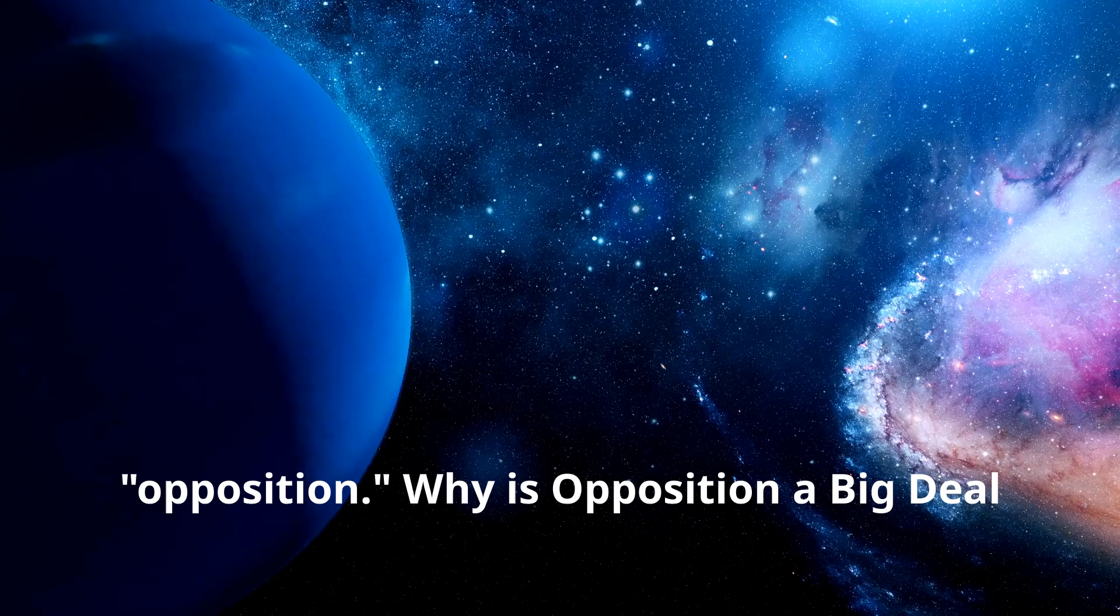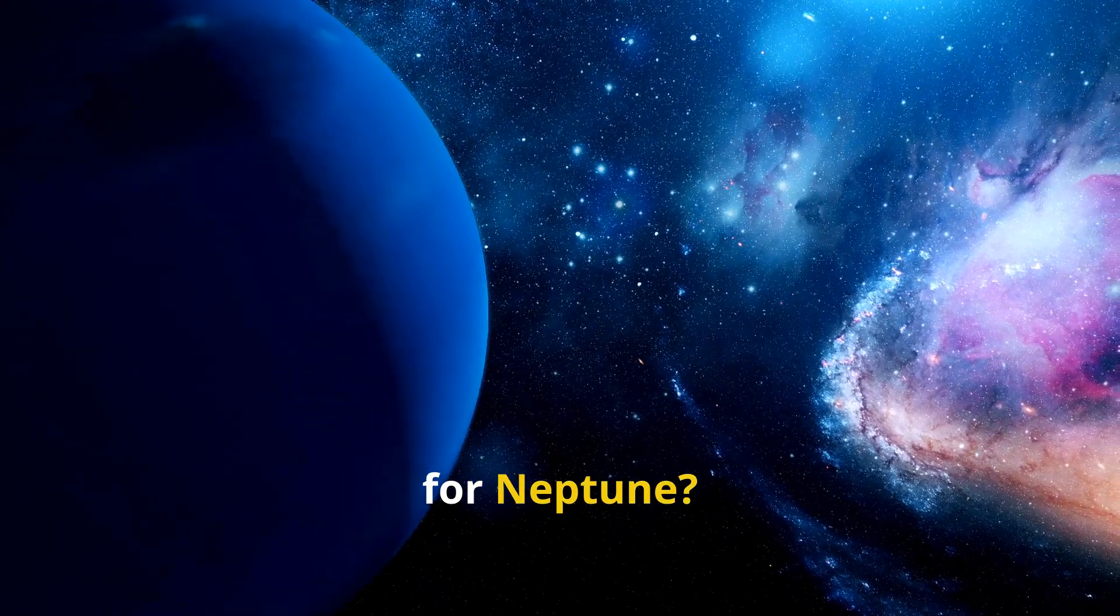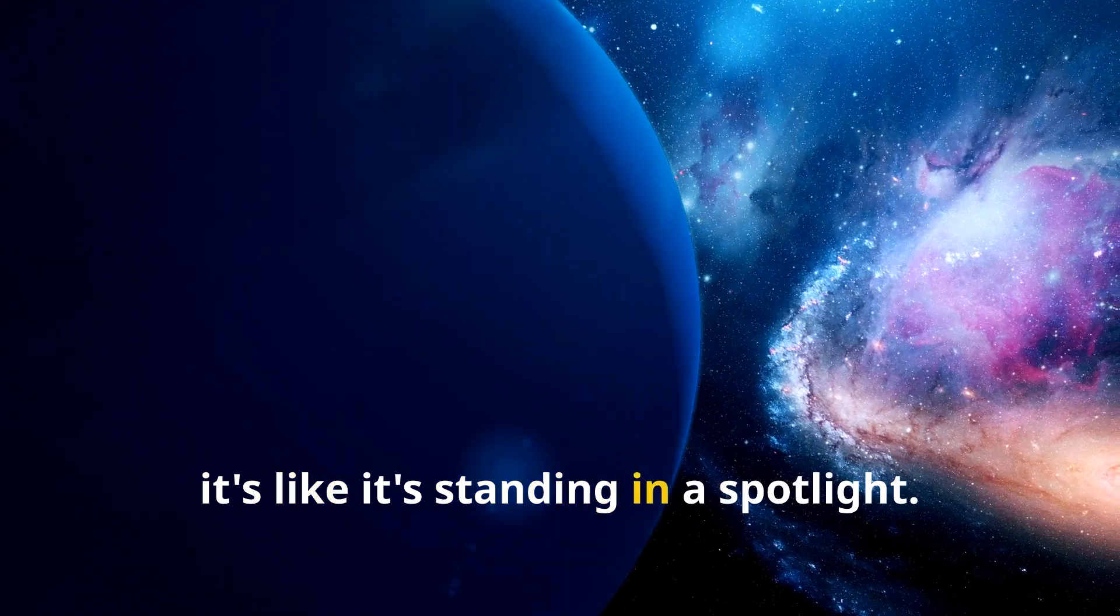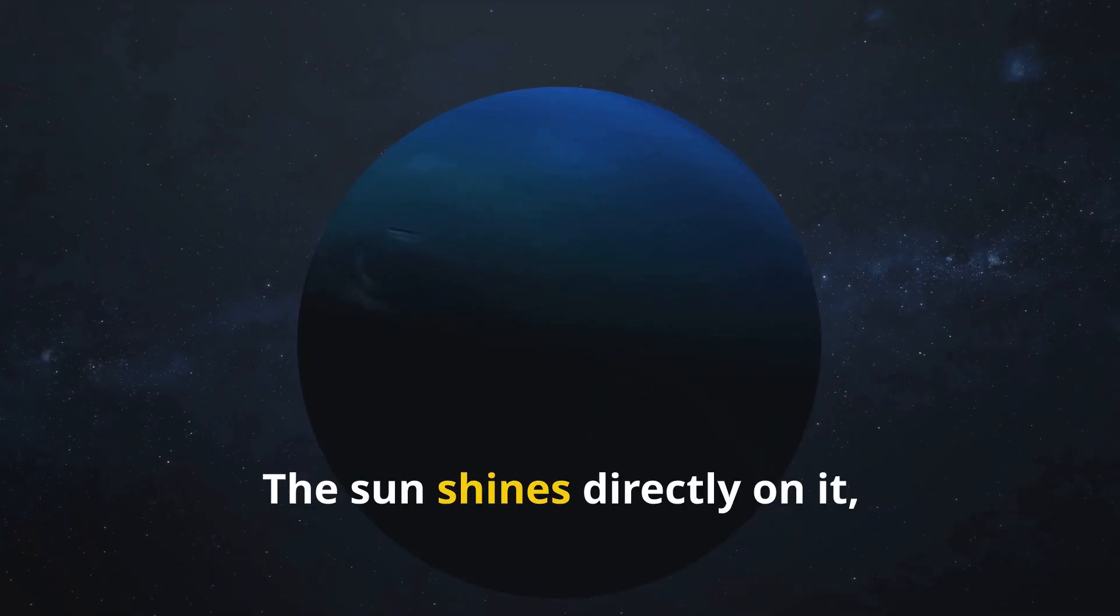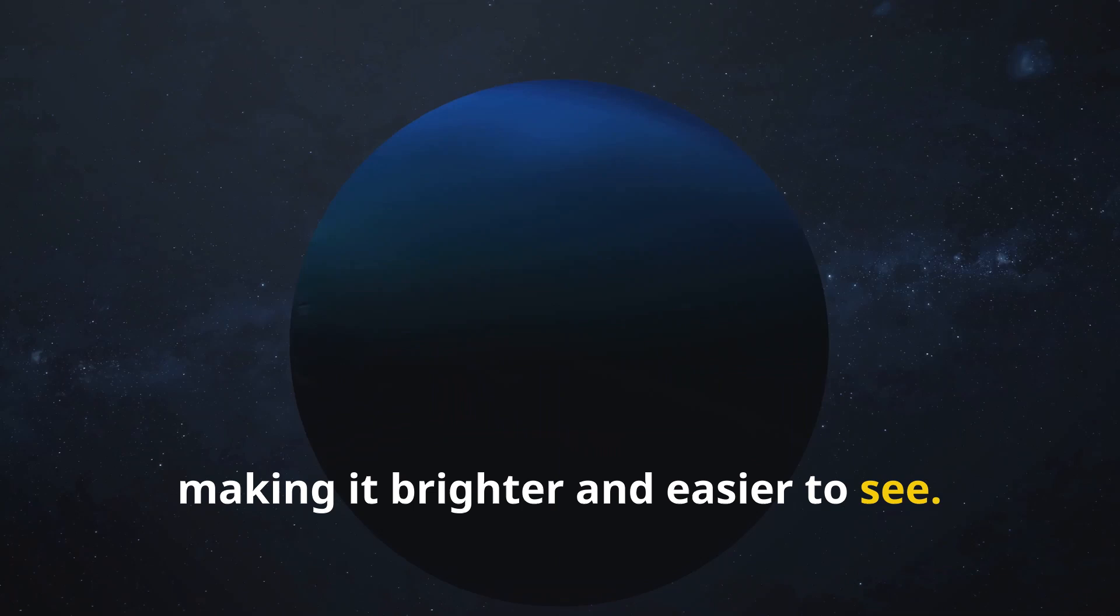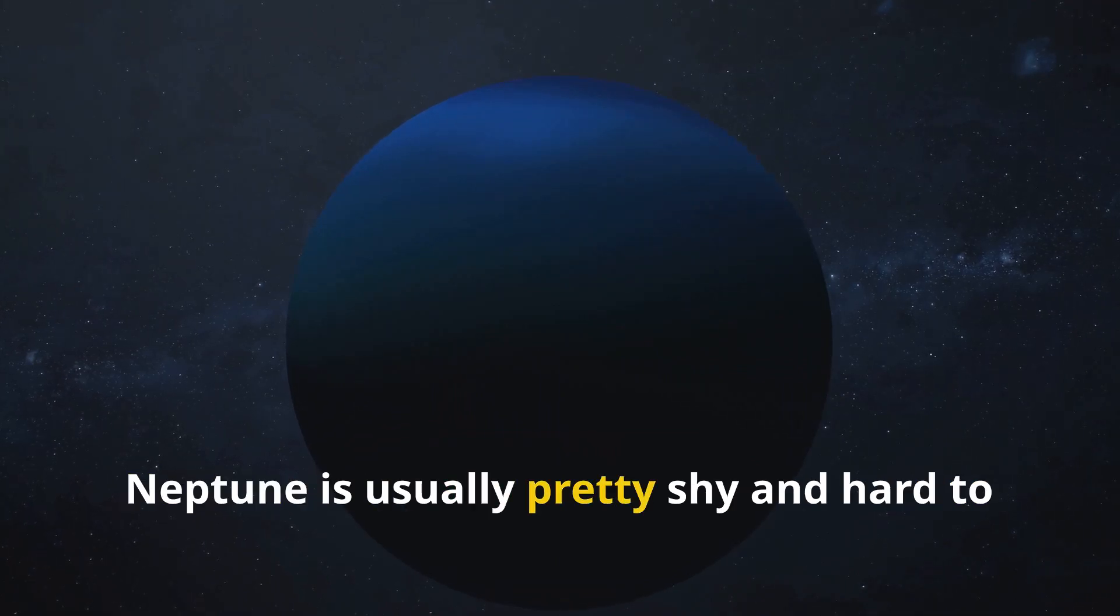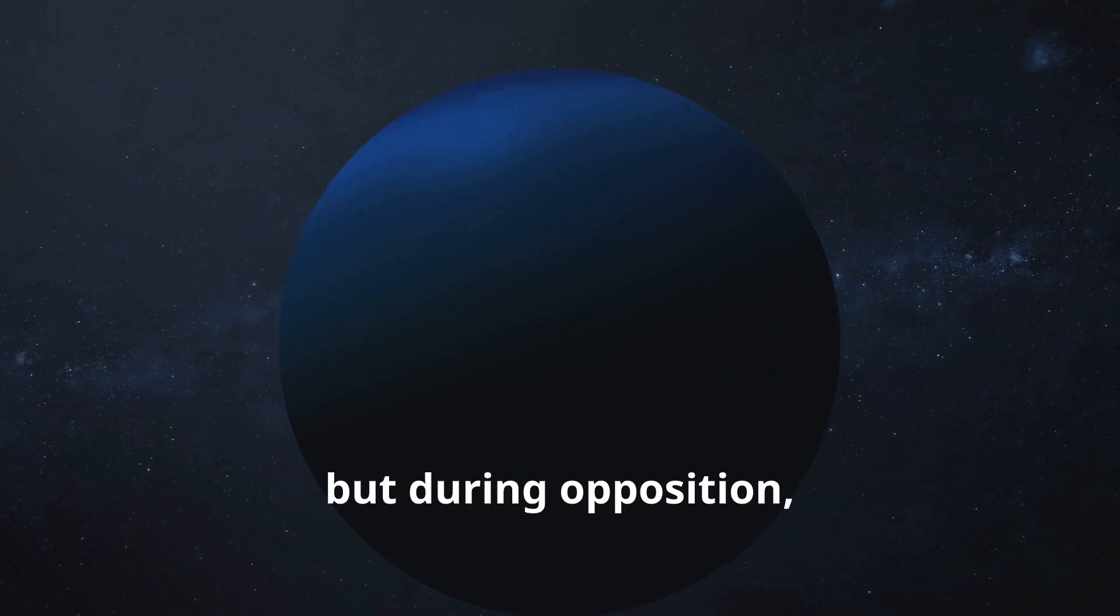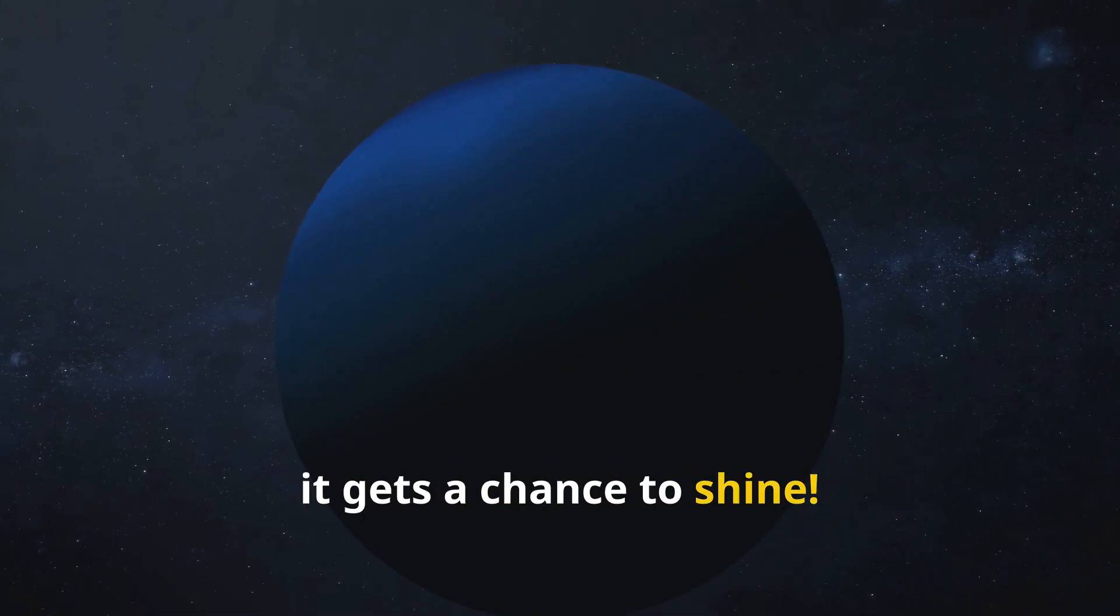Why is opposition a big deal for Neptune? When a planet is at opposition, it's like it's standing in a spotlight. The Sun shines directly on it, making it brighter and easier to see. Neptune is usually pretty shy and hard to spot because it's so far away, but during opposition it gets a chance to shine.